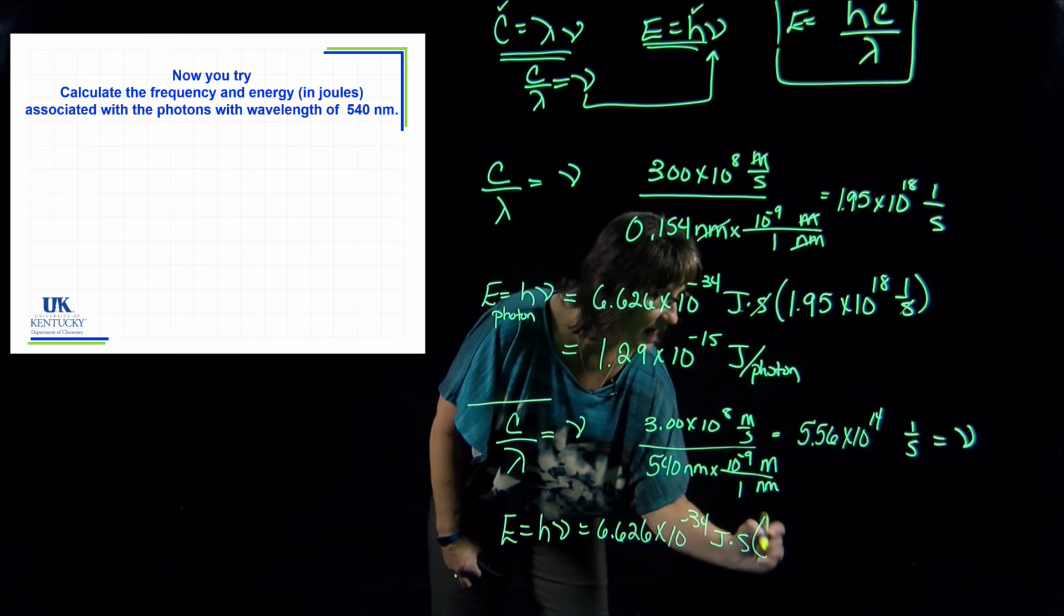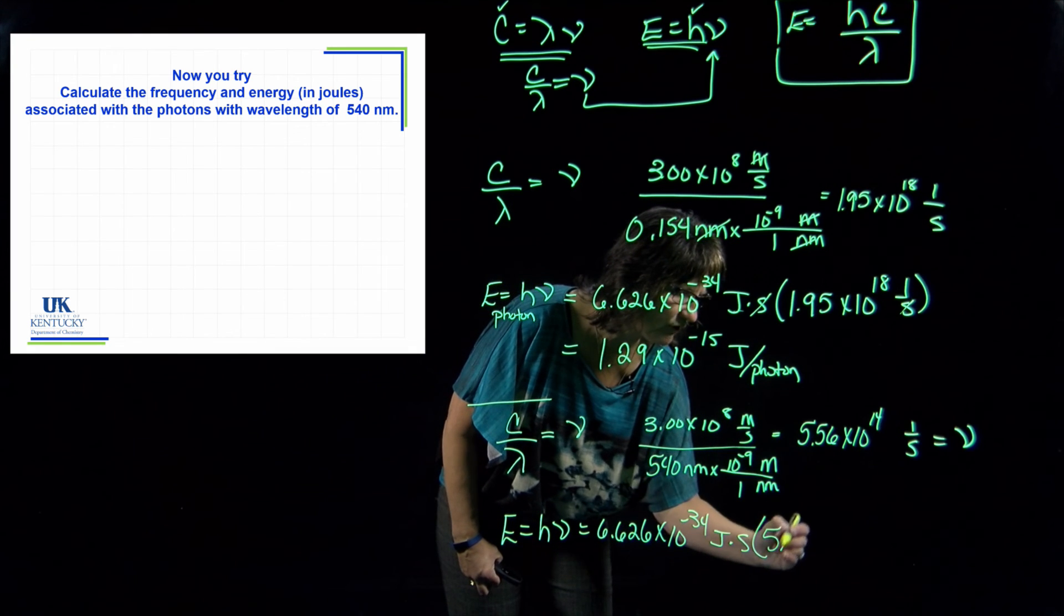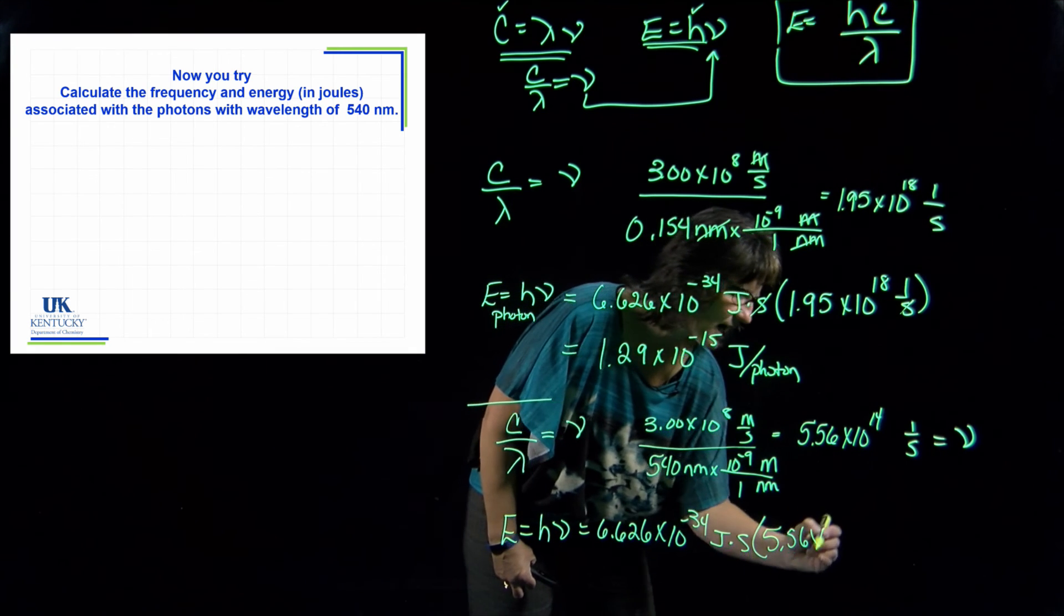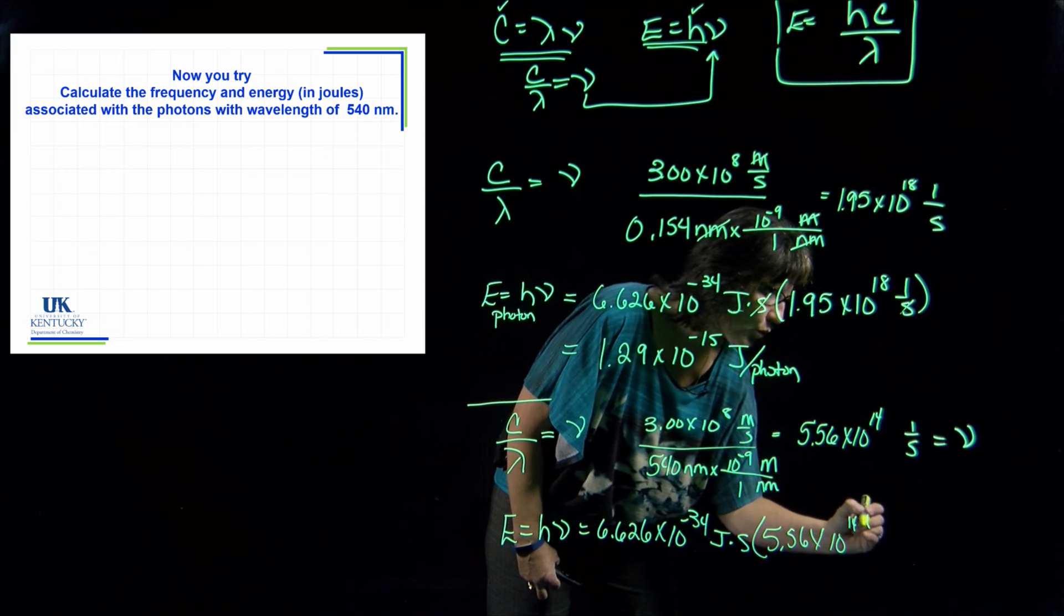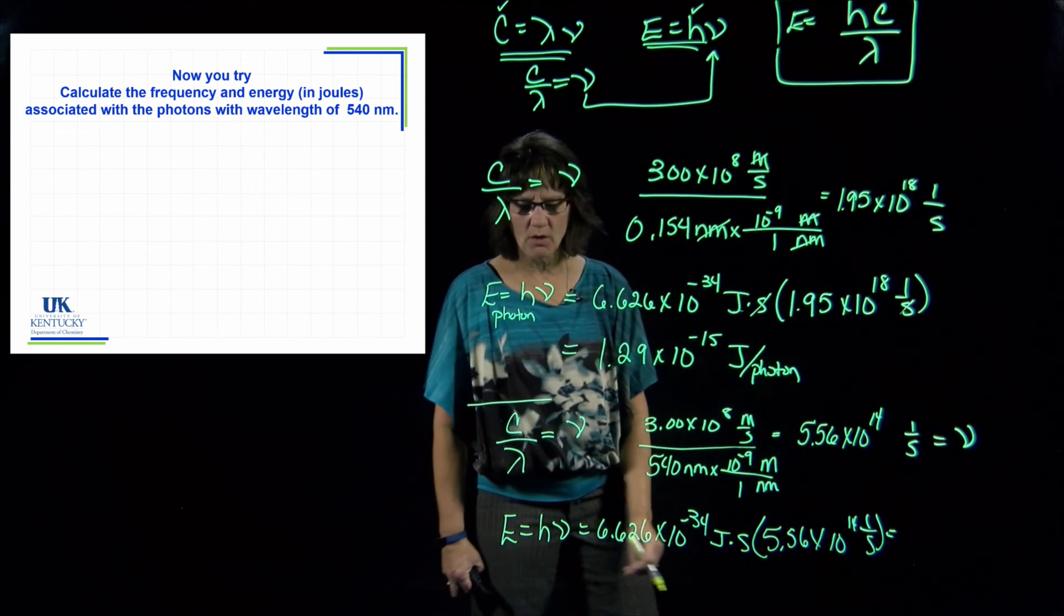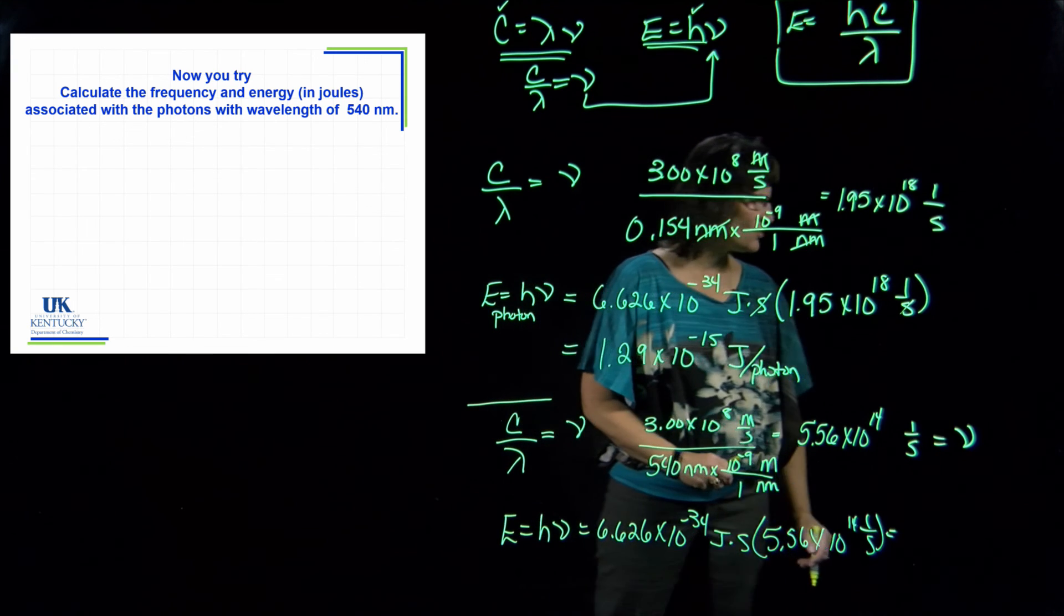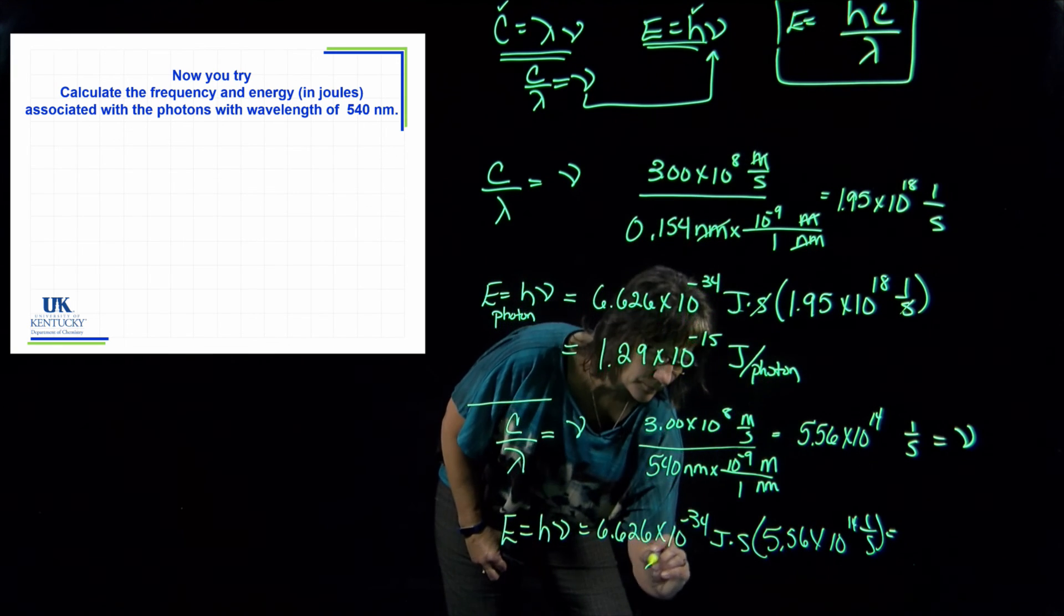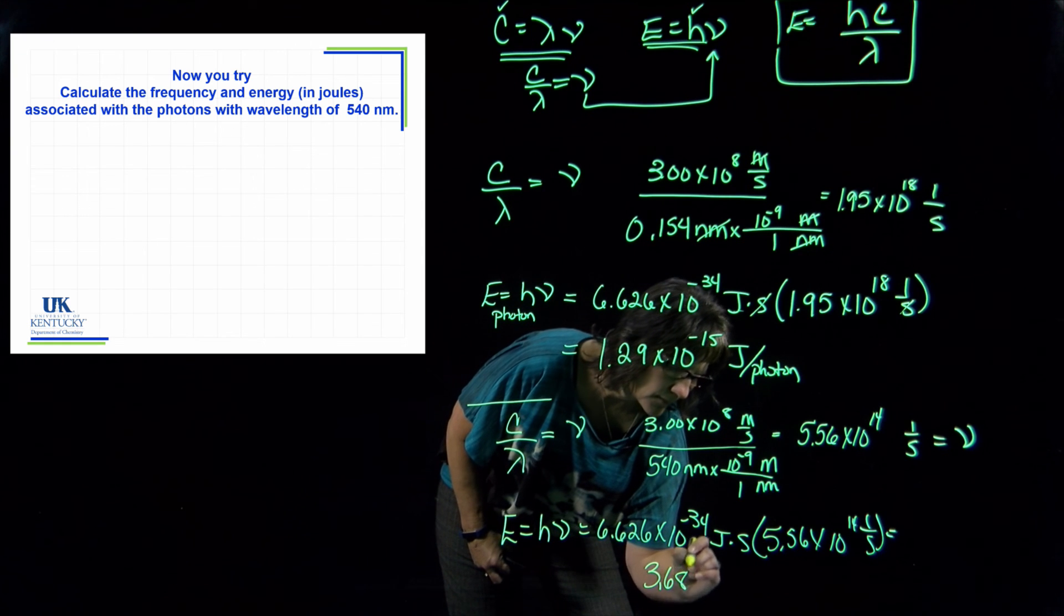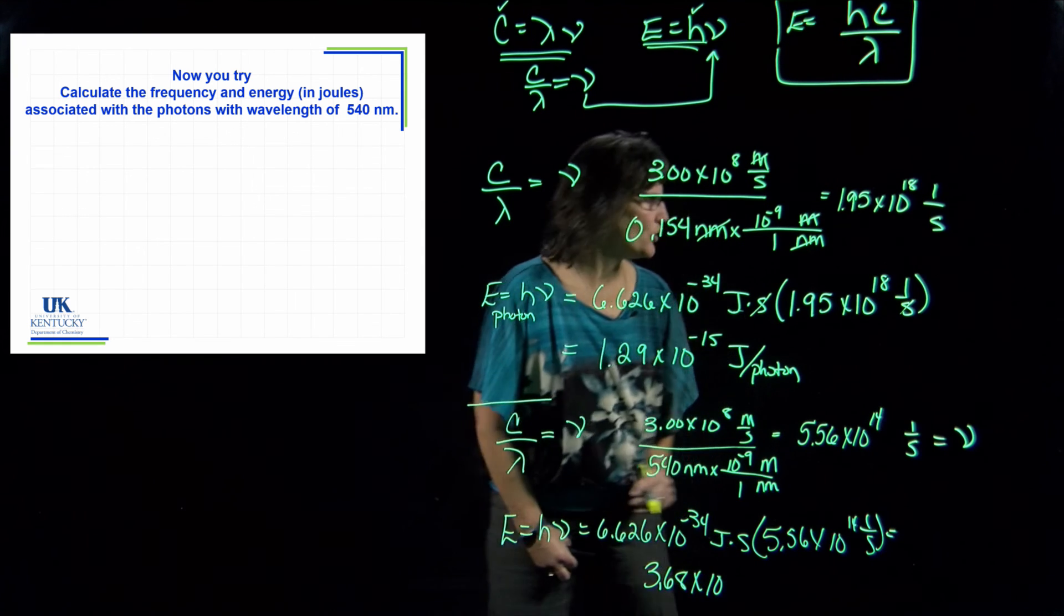This is going to give me the value of this for the energy of one photon, and it's 3.68 times 10 to the negative 19. It's a very small number for the energy because that's the energy of one photon.